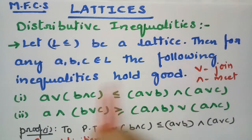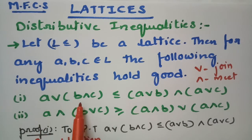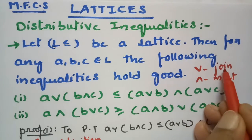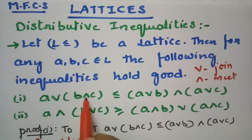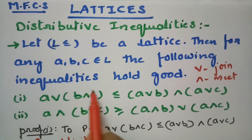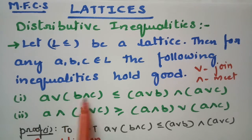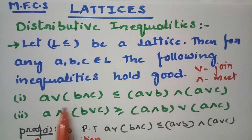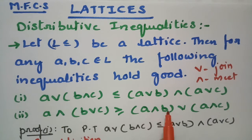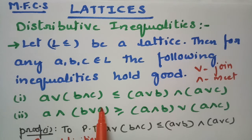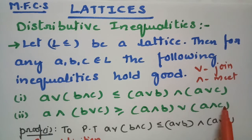Then for any a, b, c belonging to L, the following inequalities hold. The first inequality is: (a ∨ b) ∧ c ≤ (a ∨ b) ∧ (a ∨ c), where a is distributed to both b and c — this is the distributive inequality. The second inequality is: a ∧ (b ∨ c) ≥ (a ∧ b) ∨ (a ∧ c).